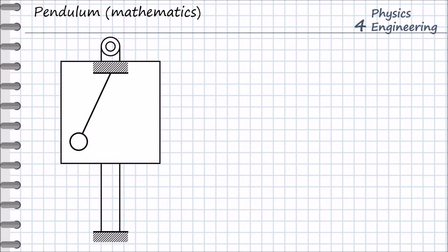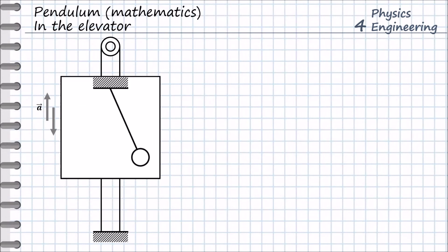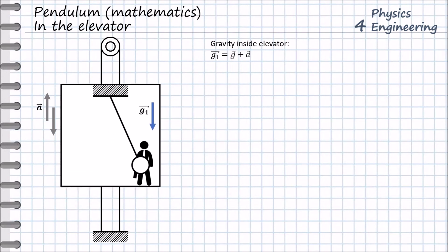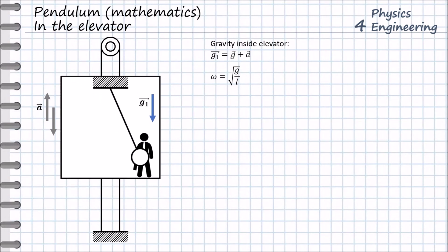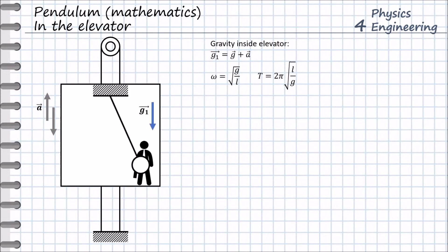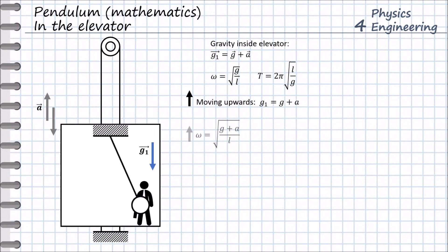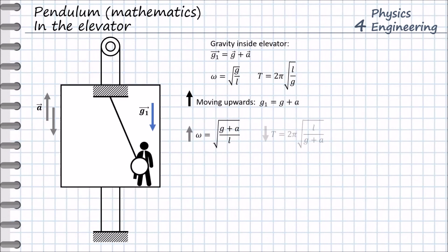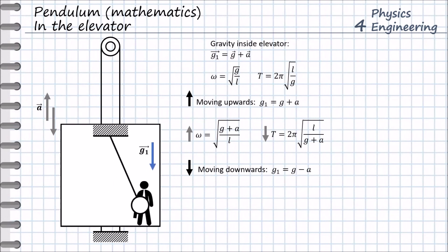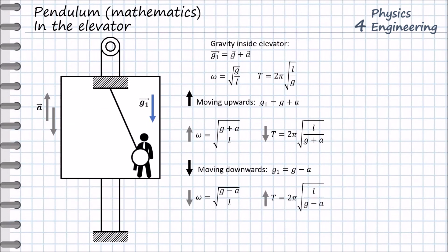Now we have a challenge: our pendulum is moving inside an elevator that moves up and down with a linear acceleration A. This means the effective gravity inside the elevator, G1, is different from outside. It equals G plus A, where A is the linear acceleration of the elevator. For the oscillation frequency and period, we use G1 — the effective gravity inside the elevator. If the elevator moves upward, the effective gravity increases, so the oscillation frequency increases but the oscillation period decreases. If the elevator moves downward, G1 equals G minus A, so the oscillation frequency is lower and the oscillation period is higher.